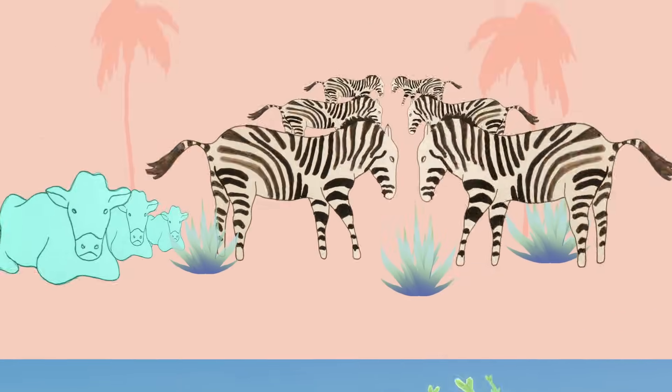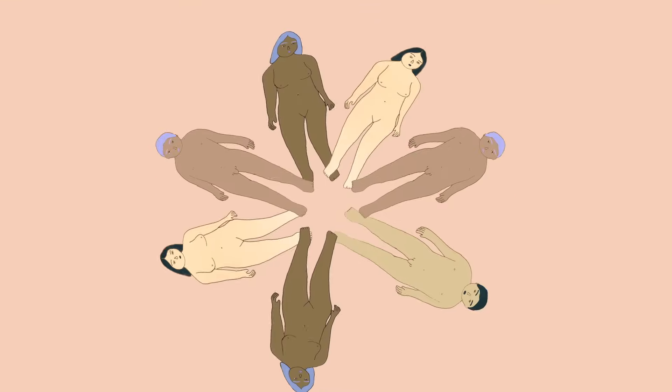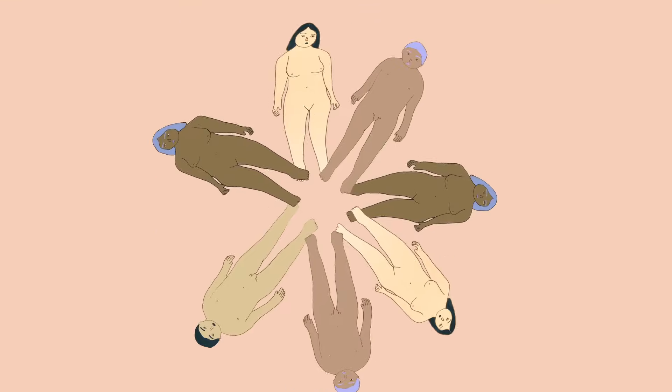Every species reproduces, but in different ways. For humans to make a baby, there's lots of stuff that must be just right. But the two key players are the sperm and the egg.